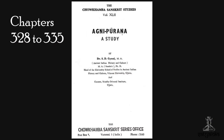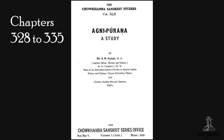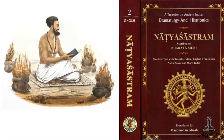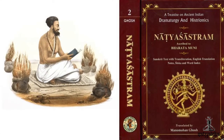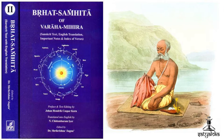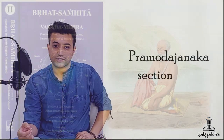Chapters 328 to 335 of the Agni Purana, Chapter 15 of the Natya Shastra, Chapter 104 of the Bruhat Samhita, and the Pramodha Janaka section of Mana Solasa contain embedded treatises on Chandas.